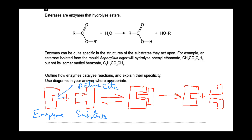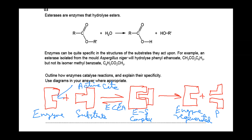Then the substrate is released again. When the energy available is less than the activation energy, the enzyme-substrate complex forms. This is your enzyme-substrate complex. This is your enzyme — regenerated — and these will be the products. If the energy is greater than or equal to the activation energy, product formation will occur.